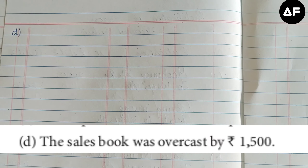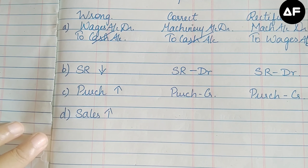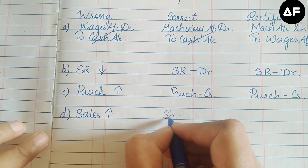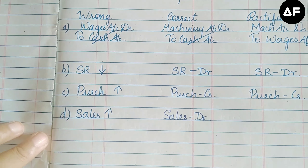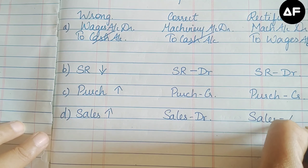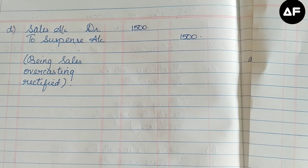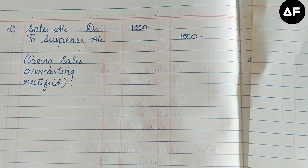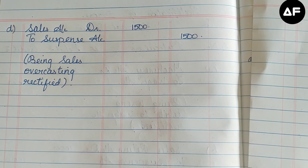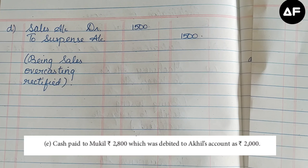The fourth transaction: the sales book was over-cast by rupees 1500. Sales book naturally shows a credit balance; when it is over-cast, we correct it by debiting it. The rectification entry is: Sales Account Dr. to Suspense Account for rupees 1500, rectifying the over-casting.